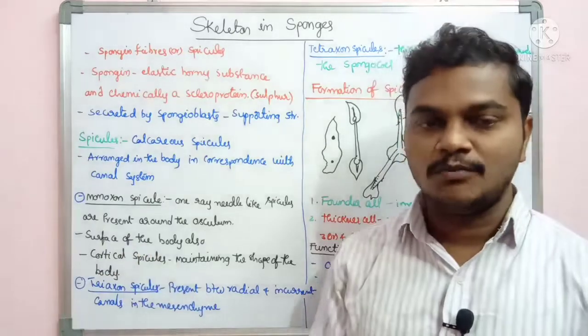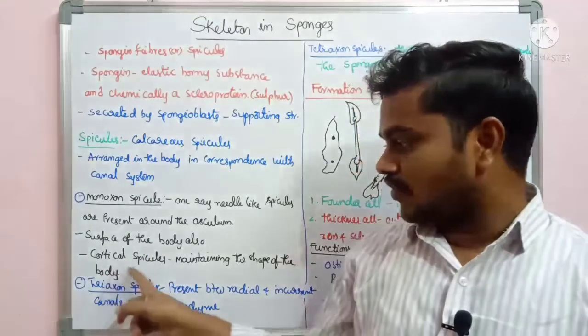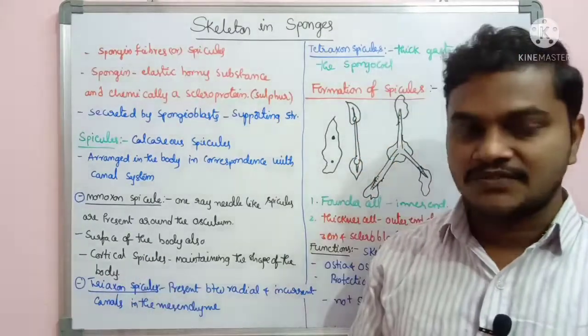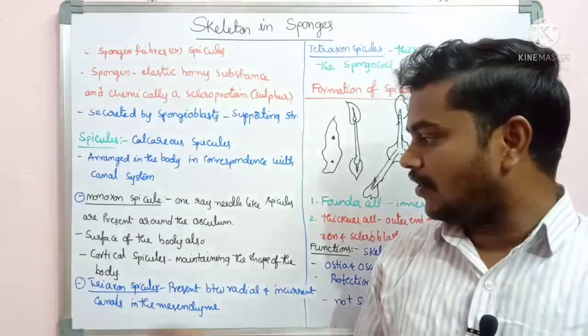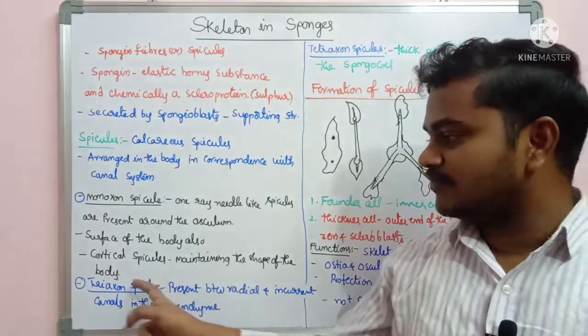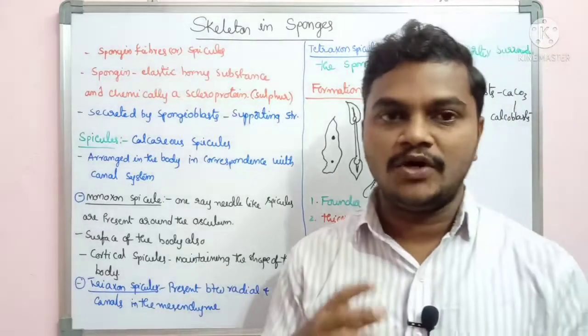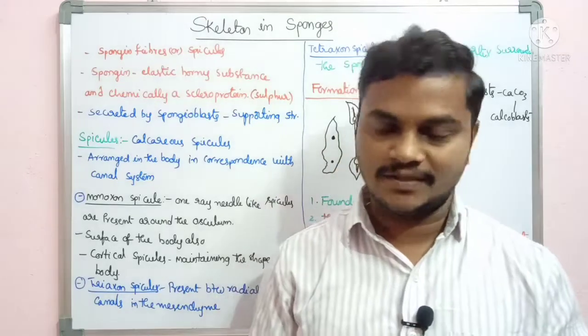Spicules are also found on the surface of the body wall. Cortical spicules are majorly present in the cortex, and they help maintain the shape of the body.